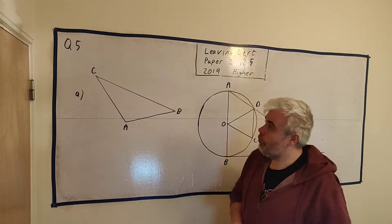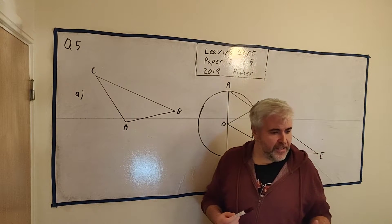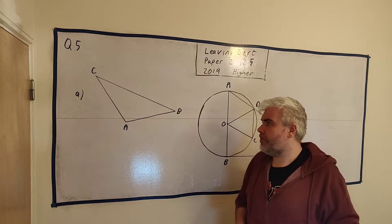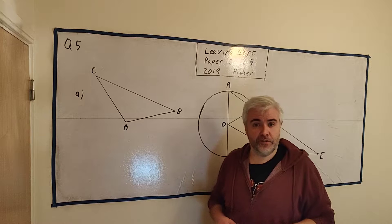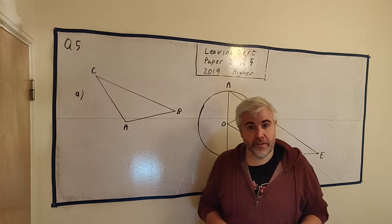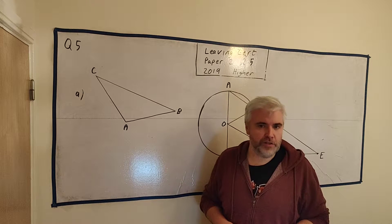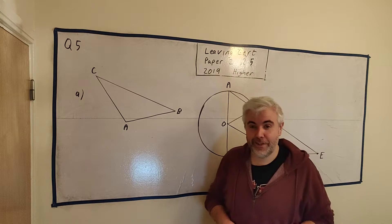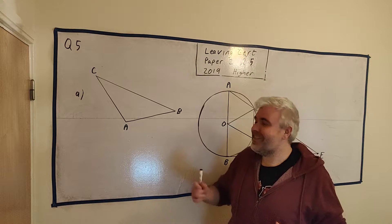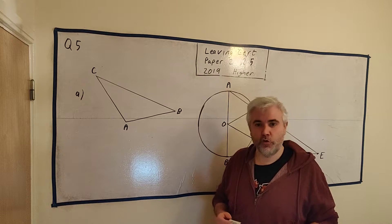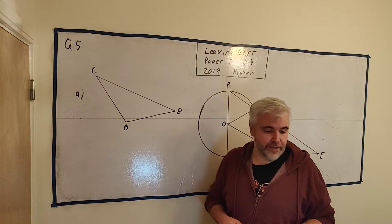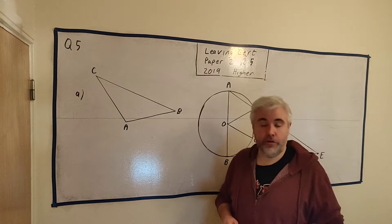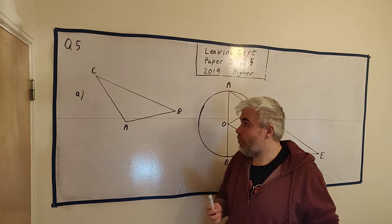On the left part of the board we have part A. Part A simply asks us to draw, showing all construction points, the orthocenter of the triangle. Now the hardest thing about this is to remember which is the orthocenter because we learn about four centers to a triangle. There's the centroid, the circumcentre, the incentre, and what we're being asked to find here, the orthocenter.